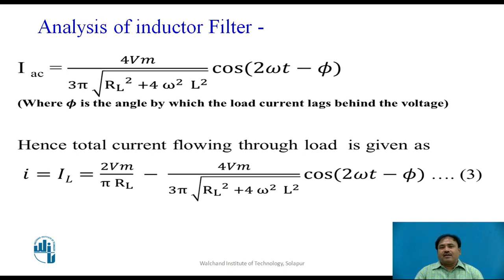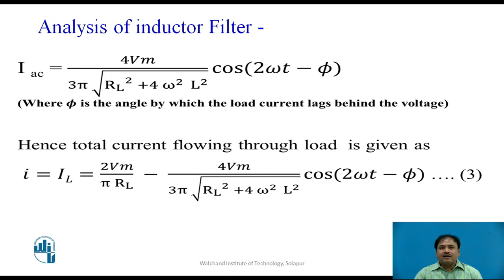As noted in the waveform, the peak of the voltage across the rectifier and the peak of the voltage across the load do not match — there is a lag. So the AC component is redefined with a phase angle φ in the cosine term, where φ defines the angle of lag between the input voltage and the output voltage, caused by the inductor between the rectifier output and the load. We can then redefine the total load current IL as the DC component 2VM/(π·RL) minus an AC term containing the 2ωt factor.